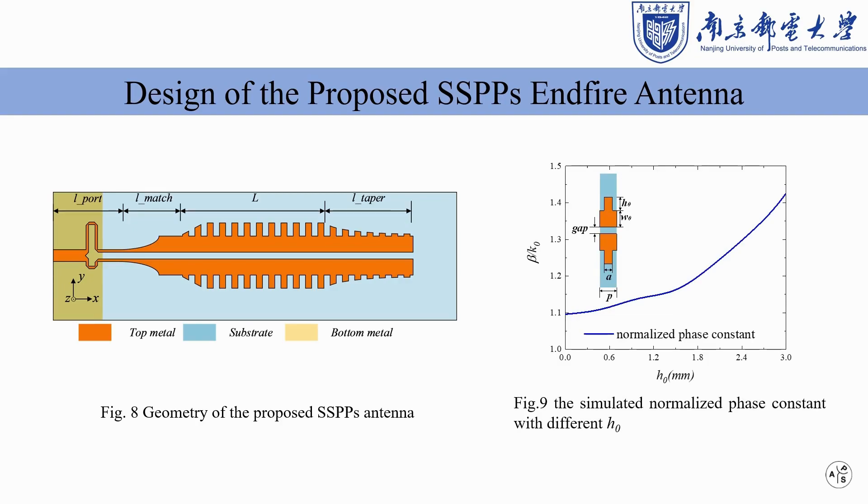By adding this disappearing structure, the phase constant of this SSPPs transmission line is gradually reduced towards that of the free space, and this can reduce the length of the antenna.